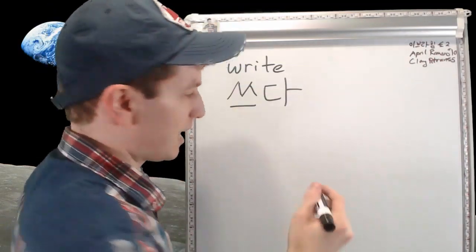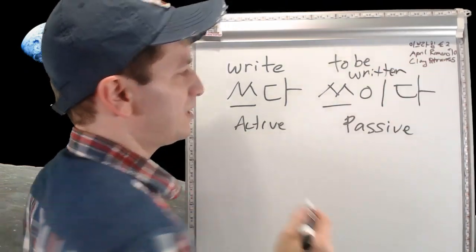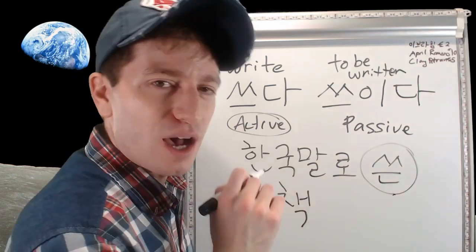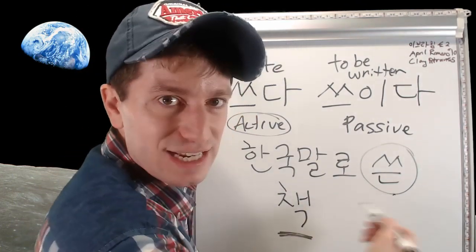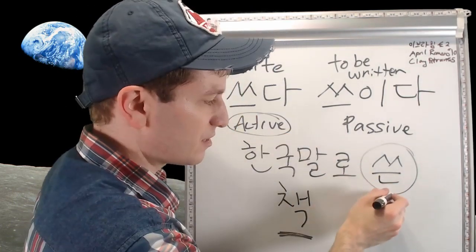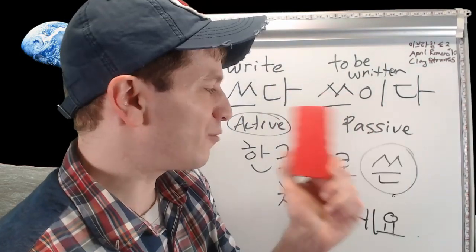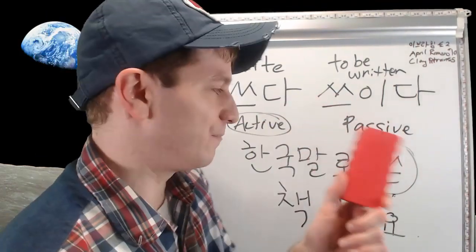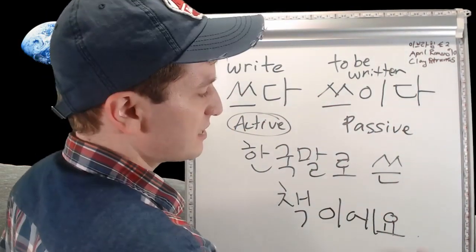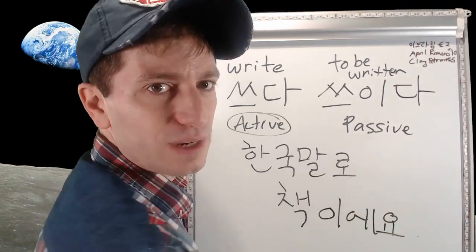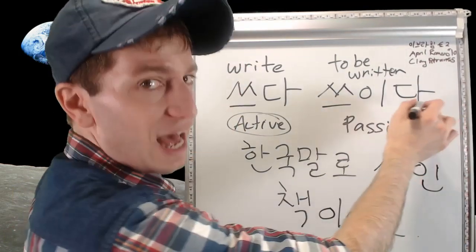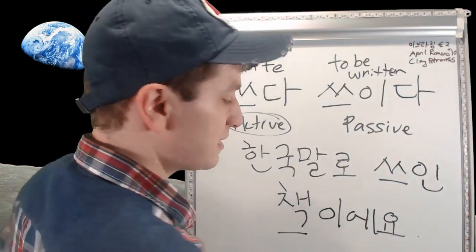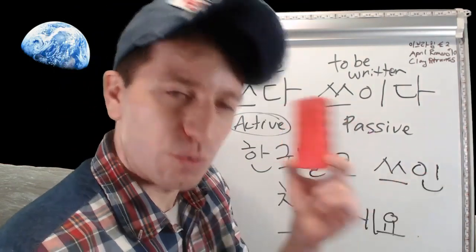쓰다 means 'to write something,' and 쓰이다 means 'to be written.' For example, 한국말로 쓴 책 means 'a book that someone wrote in Korean' — active voice, someone did it. But if you want to say 'a book that is written in Korean' without specifying who wrote it, you use 쓰인 — 한국말로 쓰인 책. Now you don't have to say who wrote it.